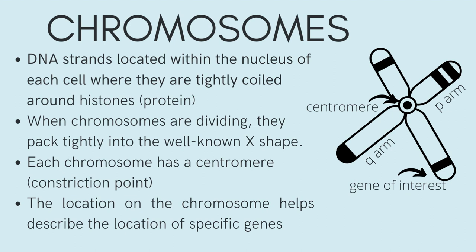In the nucleus of each cell, the DNA molecule is packaged into thread-like structures called chromosomes. Each chromosome is made up of DNA tightly coiled many times around proteins called histones that support its structure. The DNA that makes up chromosomes becomes more tightly packed during cell division, and is then visible, making that commonly known X shape as pictured to the right. Humans have 23 pairs of chromosomes. We get 23 chromosomes from each parent, with one pair being the sex genes — either 2 X-shaped chromosomes or 1 X and 1 Y. There are special cases wherein humans have extra chromosomes such as Down syndrome, trisomy 21, and intersex.